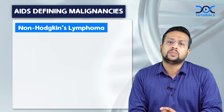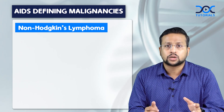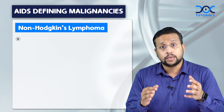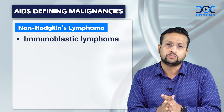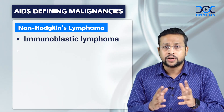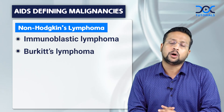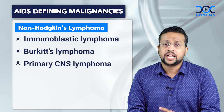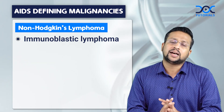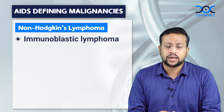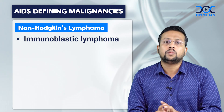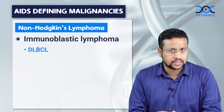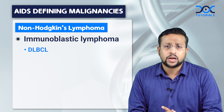Regarding non-Hodgkin's lymphoma, in the case of HIV infection it can be immunoblastic lymphoma, Burkitt's lymphoma, or primary CNS lymphoma. Among the immunoblastic lymphomas, the most common is diffuse large B cell lymphoma.